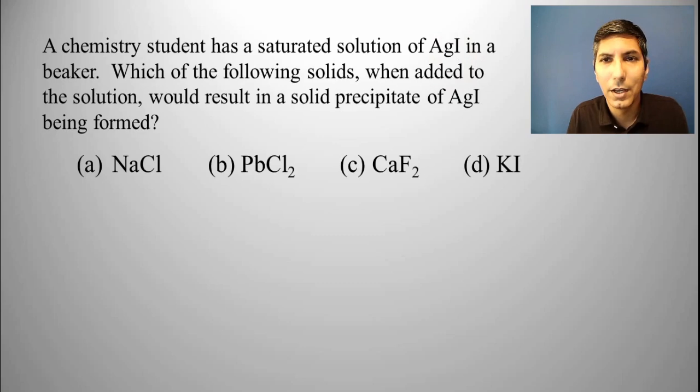Saturated means equilibrium. So you could add silver ions, you could add iodide ions. Either one of those would shift that equilibrium to the left and force the reaction to make some precipitate of silver iodide. Well, which of these four things or four choices has either silver or iodide in it?